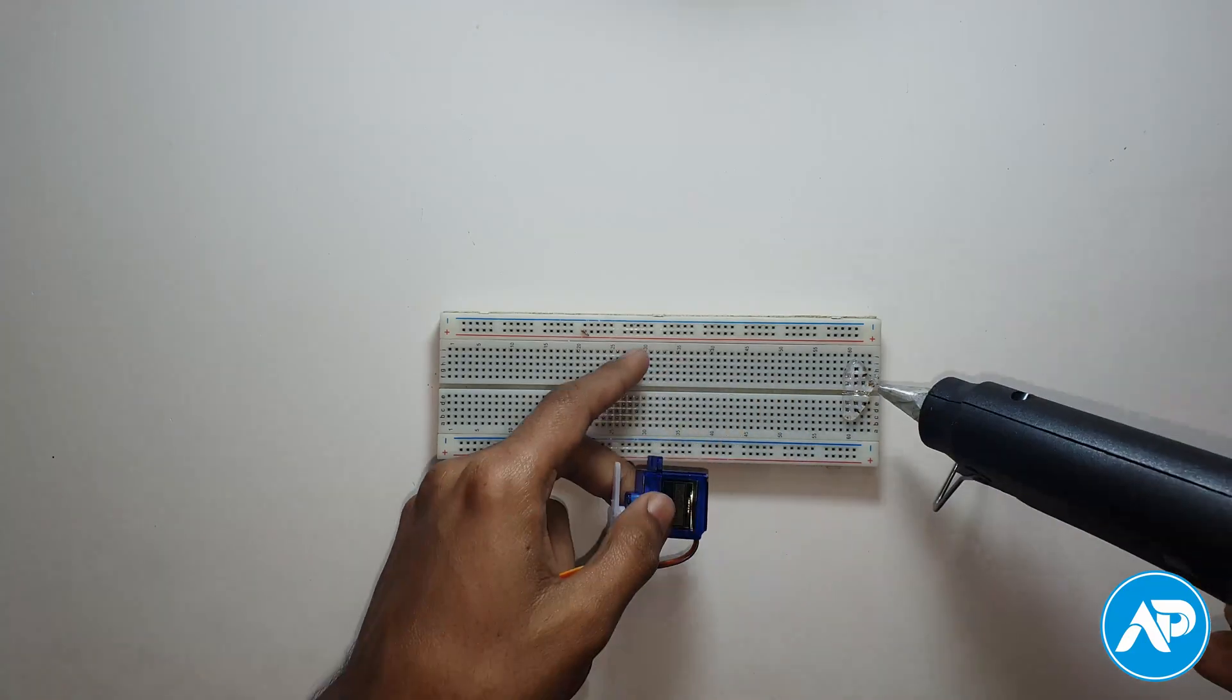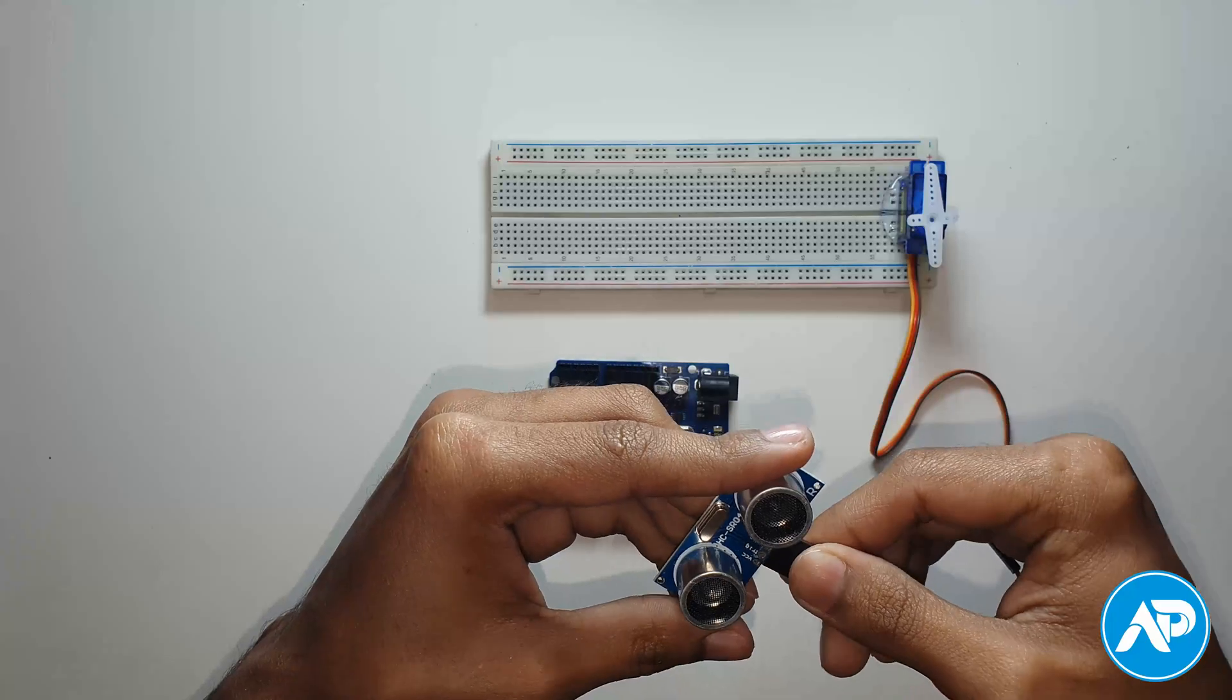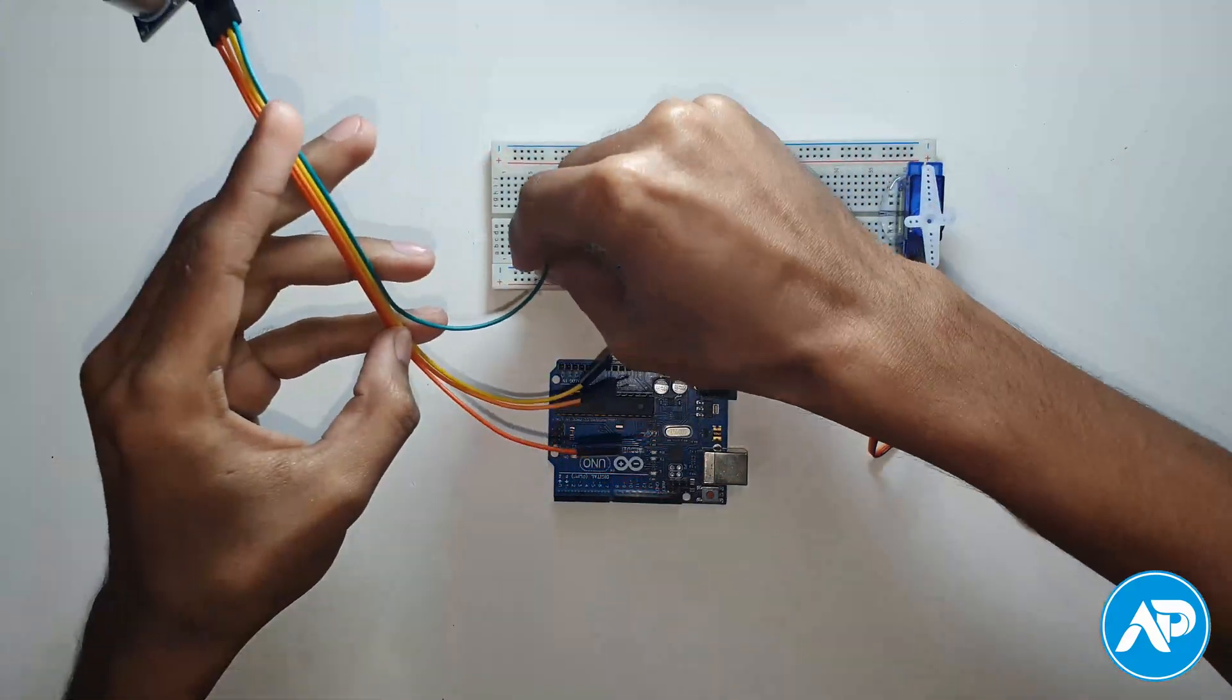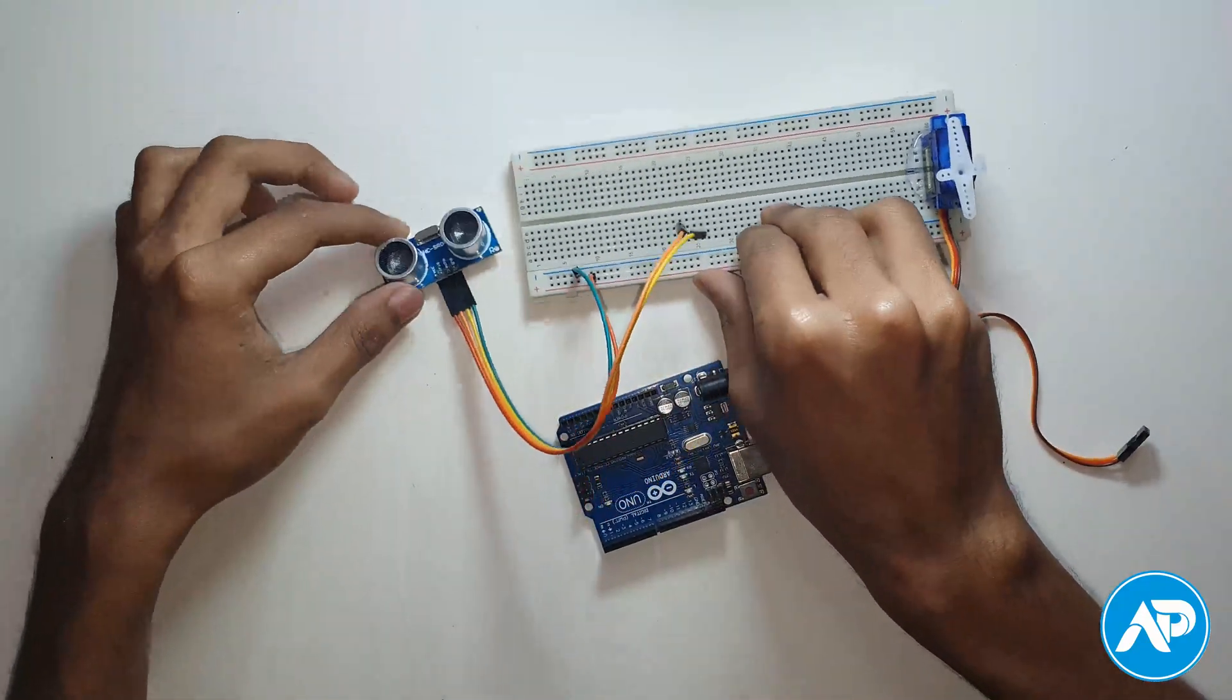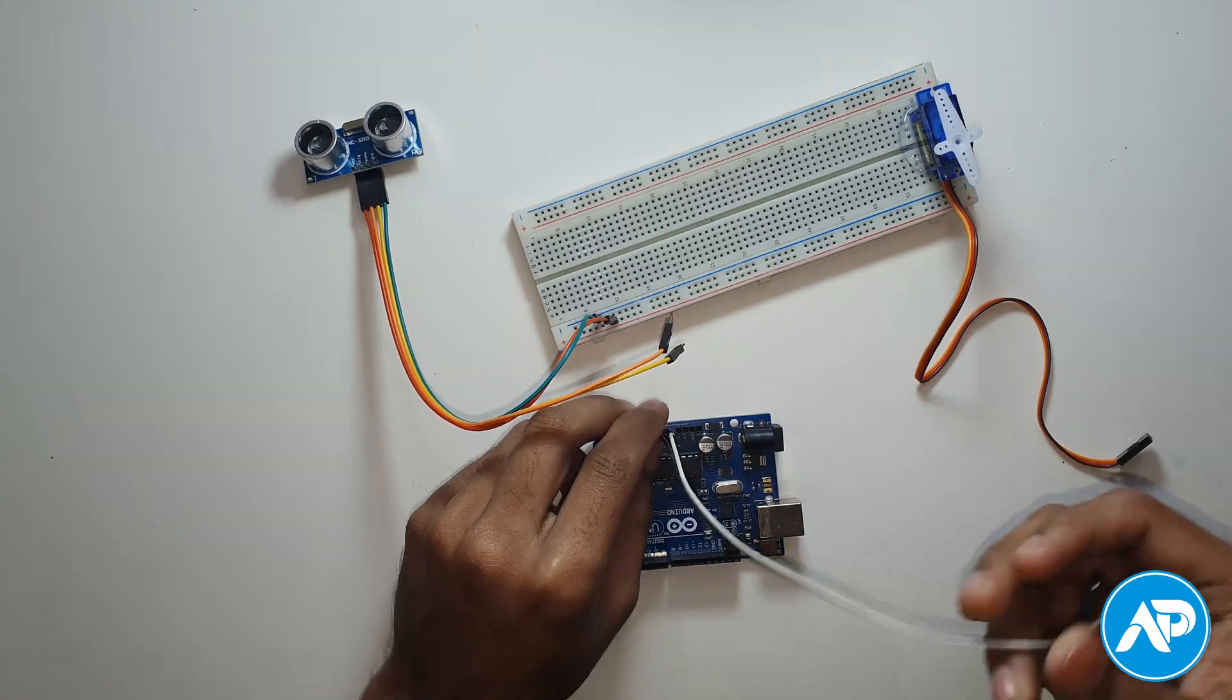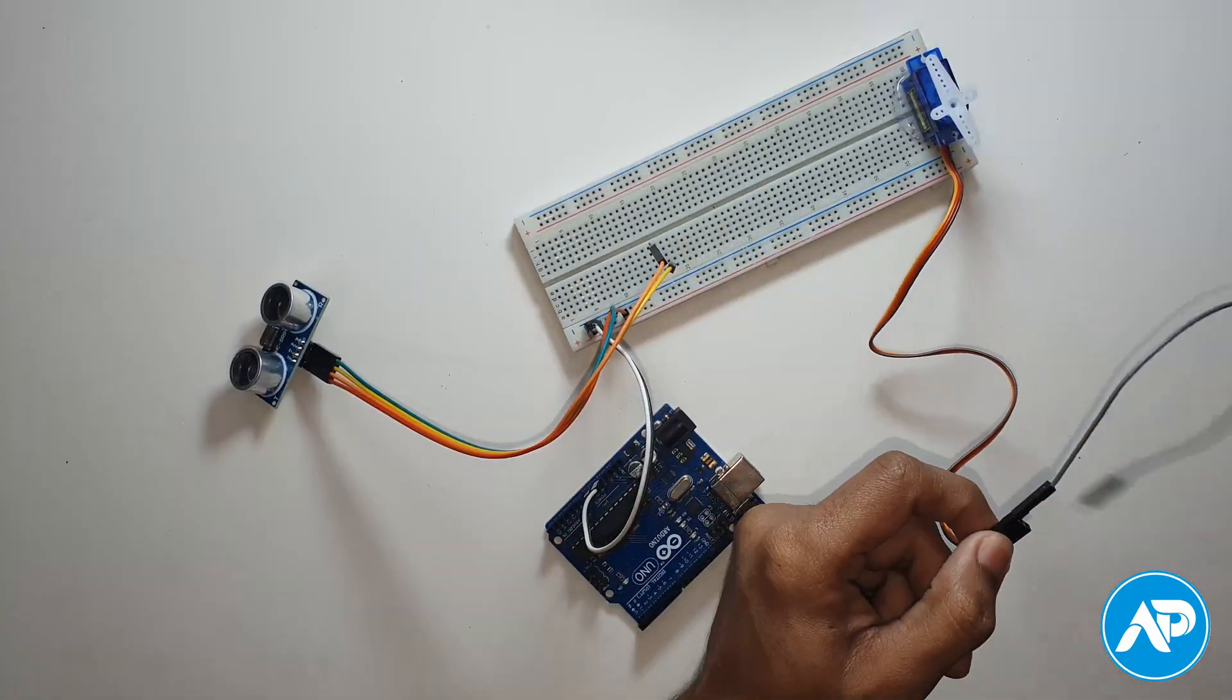Then adjust the servo motor on the breadboard. Take an Arduino Uno, then take an ultrasonic sensor. Connect all four pins of the ultrasonic sensor using female to male jumper wires. The ground pin goes to minus and VCC goes to plus. Arduino Uno 5V pin goes to plus and ground pin goes to minus of the breadboard.